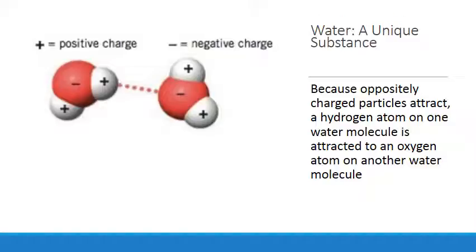Because oxygen atoms have a stronger attraction to the bonding electrons in the water molecule than the hydrogen atoms do, the oxygen side gets a partial negative charge, and the hydrogen atoms give the other side a partial positive charge. Because oppositely charged particles attract, a hydrogen atom on one water molecule is attracted to an oxygen atom on another water molecule.